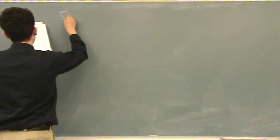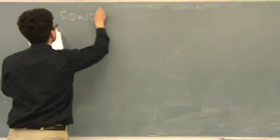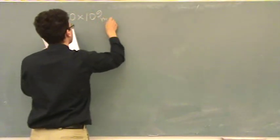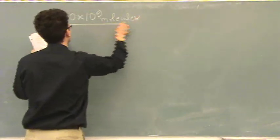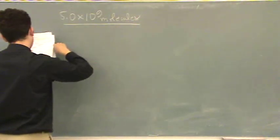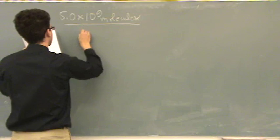So, number 31, we have 5.0 times 10 to the 9 molecules per cubic meter.